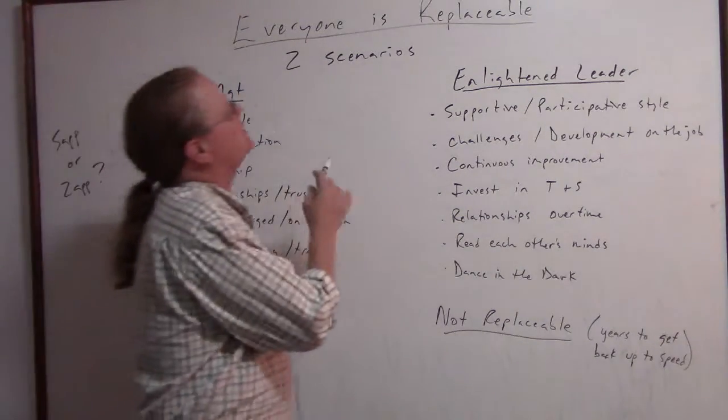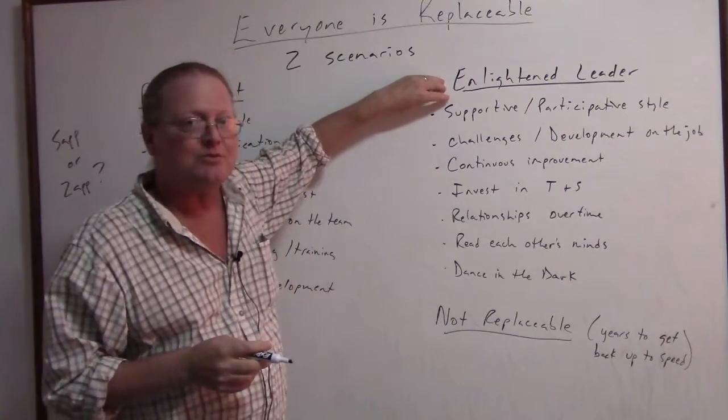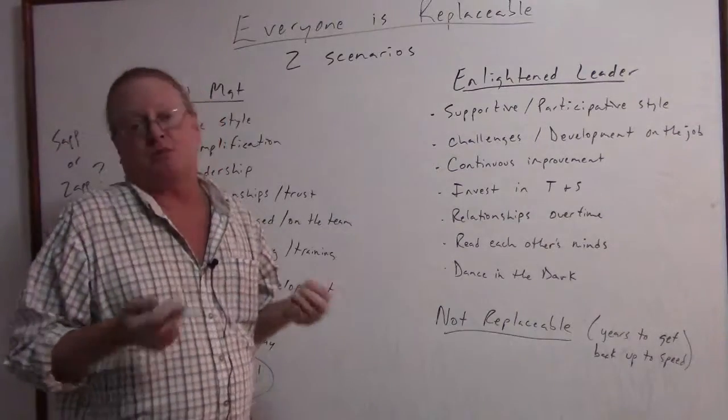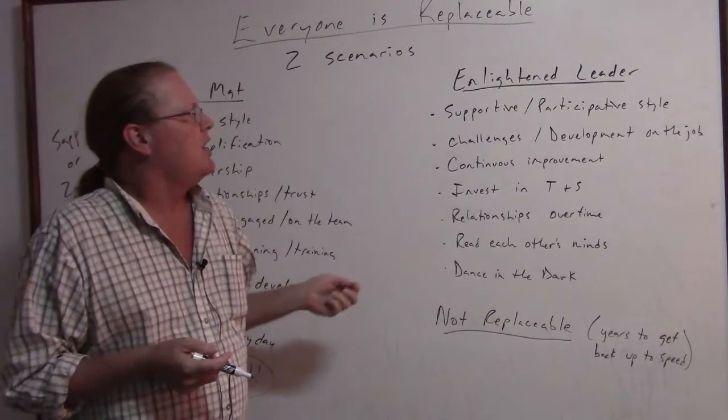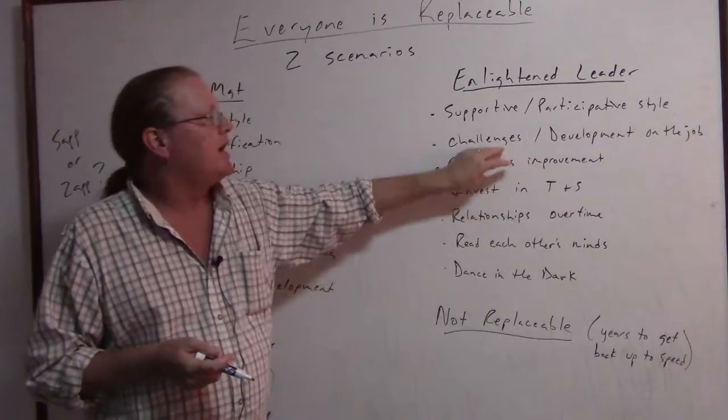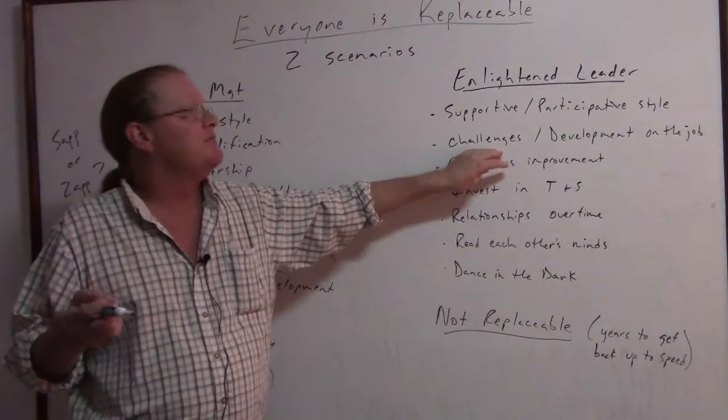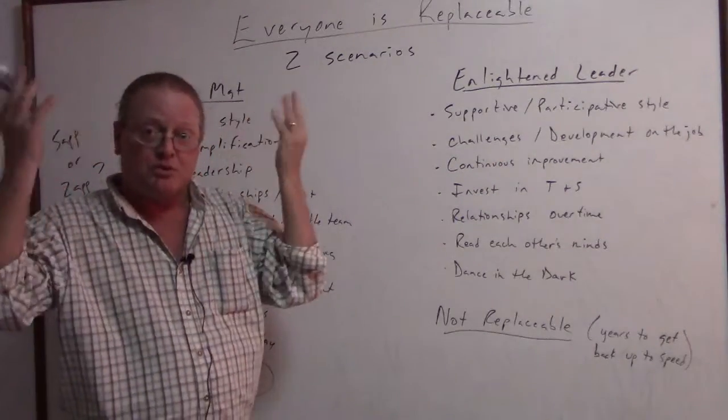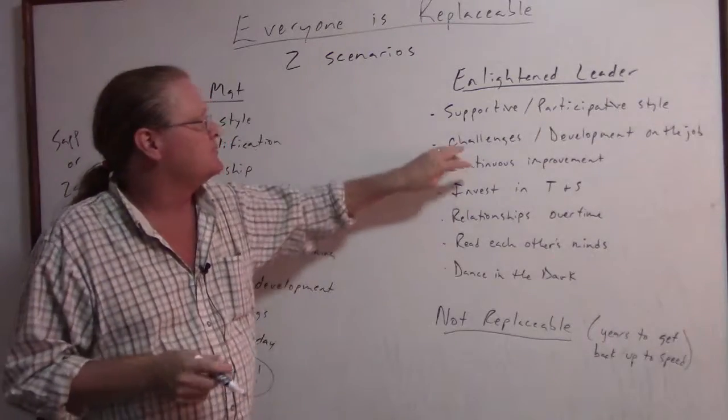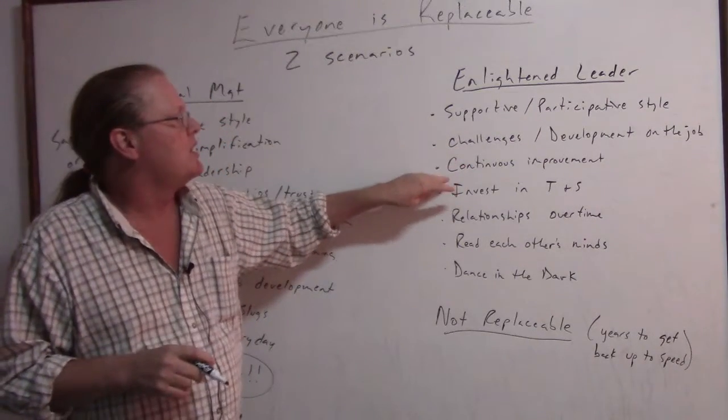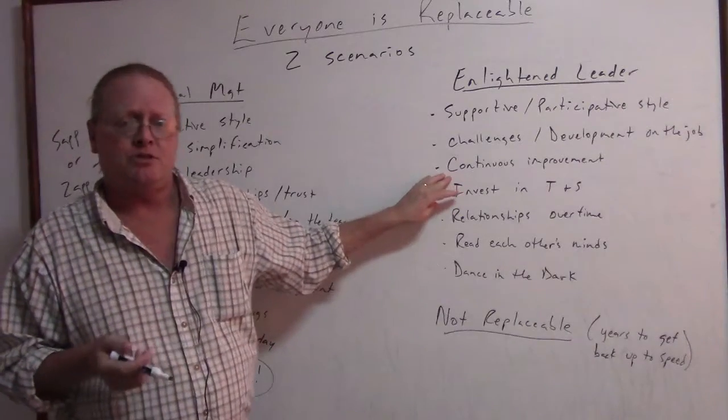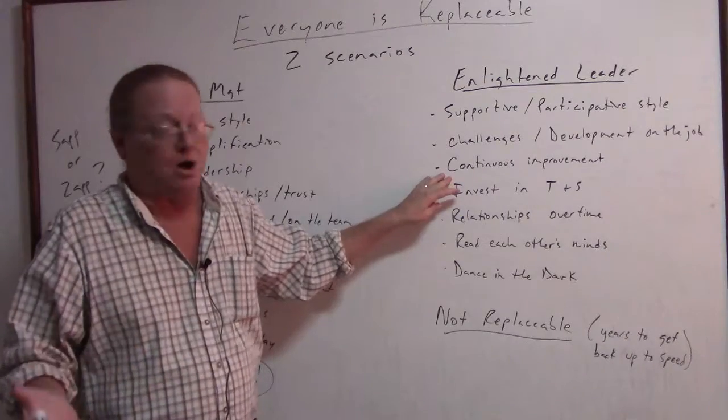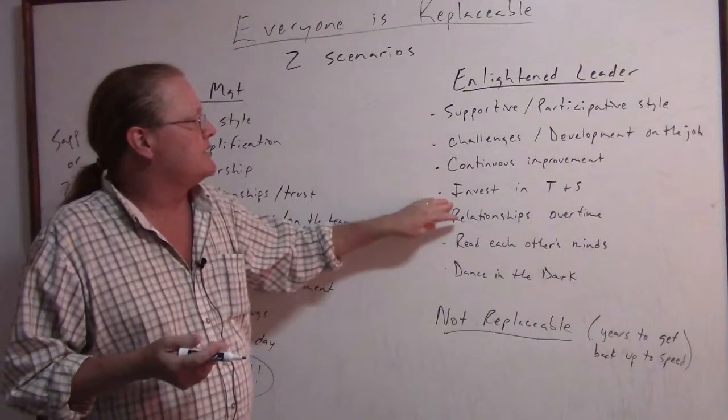But if you come up with the attitude and go over to the enlightened leader, who would be supportive and have a supportive, participative style of management leadership, people get to participate. They get challenges. They get opportunities to develop on the job, not only just job specific stuff, but the brain is working on challenges and becoming more developed. We do have a spirit of continuous improvement. How can we better ourselves? How can we better the operation, the processes and things like that?